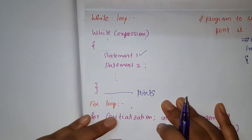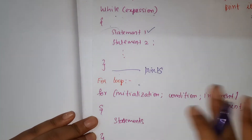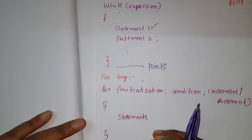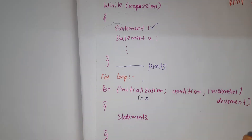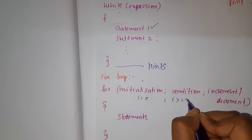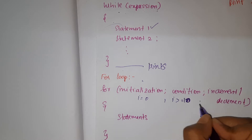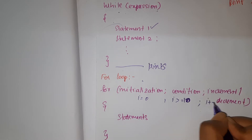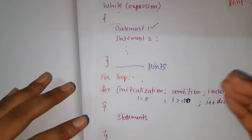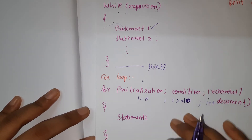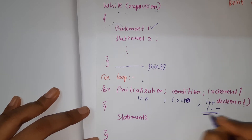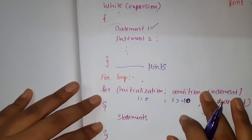That is the while loop. Now for the for loop: for initialization, we write one initialization statement like i equals zero. Then the condition — it can be i greater than or equals to 10, let's say. Then increment or decrement, like i plus plus. So: initialization, we give some value to i, then we mention the condition — greater than, less than or equals to — then increment or decrement.